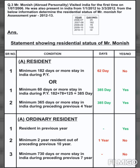The third condition for ordinary resident is: minimum 730 days or more stay in India during the preceding 7 years. However, we only have information for the preceding 4 years. Counting those 4 years: 125 plus 78 plus 182 plus 25 equals 410 days. Since 410 days is less than 730, the condition is not fulfilled — answer is no.